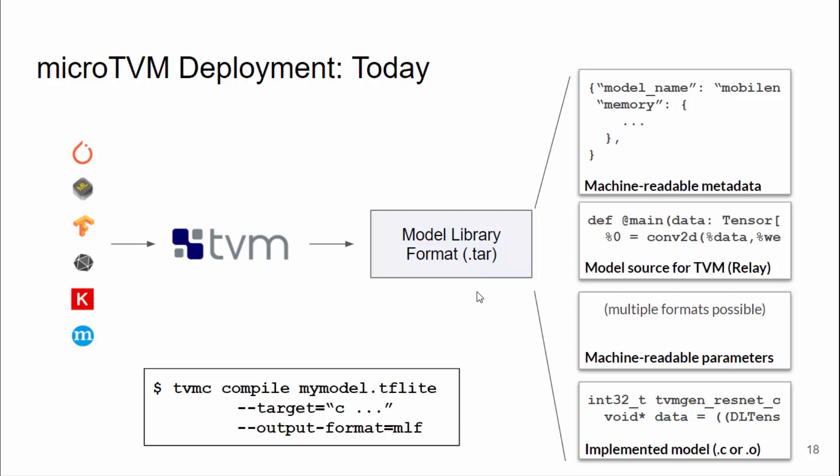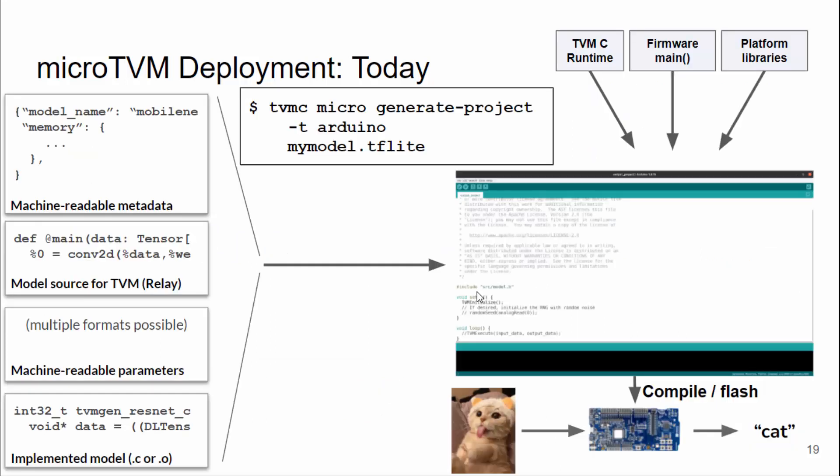So where are we today? You can install TVM and compile a model from a deep learning framework into a format we call Model Library Format, which contains everything you need to deploy the model: metadata sketching out memory requirements, the model source as TVM understands it, simplified parameters that have gone through the TVM compilation flow, and the implemented model in C or binary format. This whole thing can be done from the command line using a single command, TVMC. You can then take that Model Library Format and integrate it with your favorite firmware compilation tool, such as Arduino, add in Micro TVM runtime libraries, compile, flash, and run inference on the device.